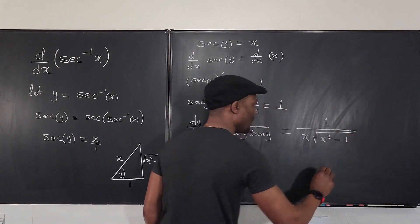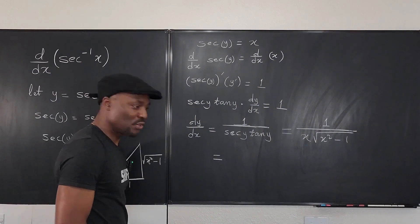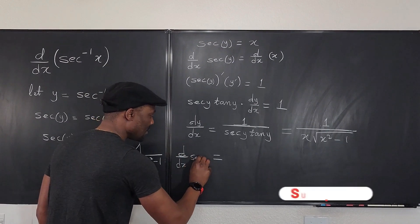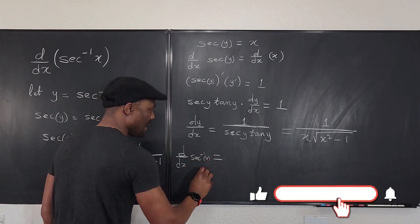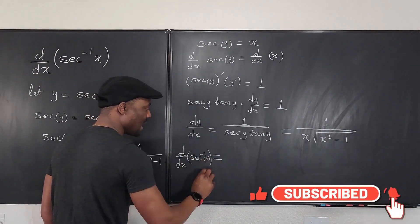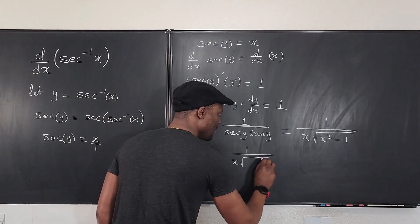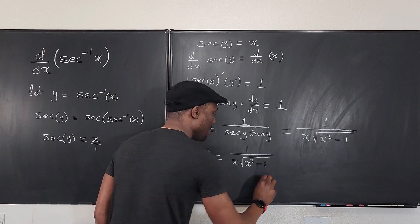And you're done. So we can say that the derivative d/dx of secant inverse of x, anytime, any day, is one over x times the square root of x squared minus one.